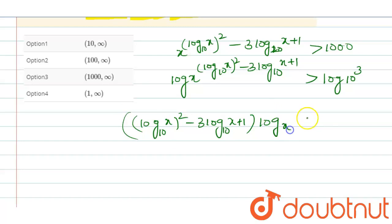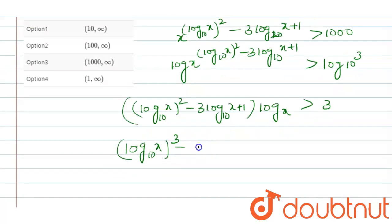...which gives (log₁₀x)³ - 3(log₁₀x)² + log₁₀x - 3 > 0.